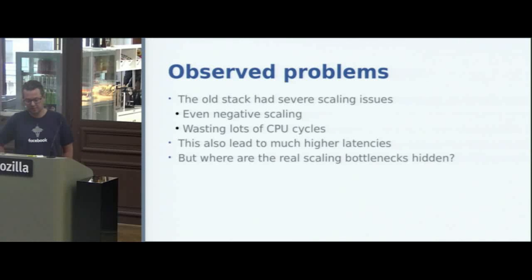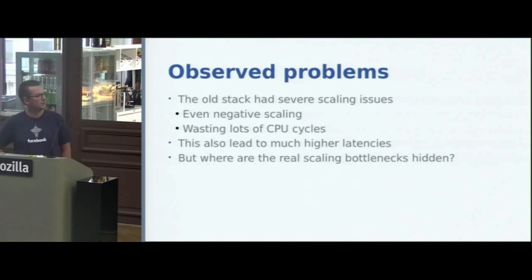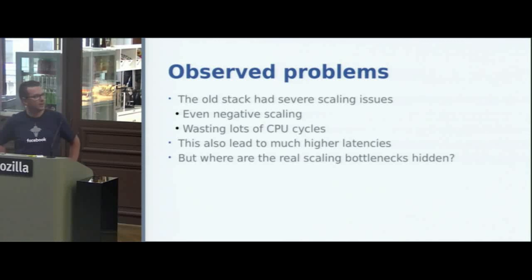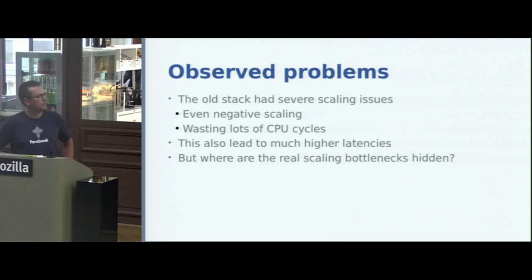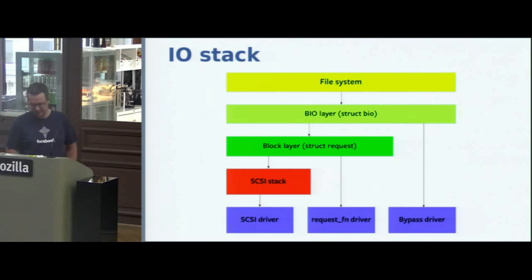Not only was it a problem on that front, but it also led to much higher latencies. When you have high contention in the system, you're spending time bouncing cache lines around between applications, or even just spinning on locks to protect some shared state in the device. So the question is: where were the real scaling bottlenecks hidden in the old stack?